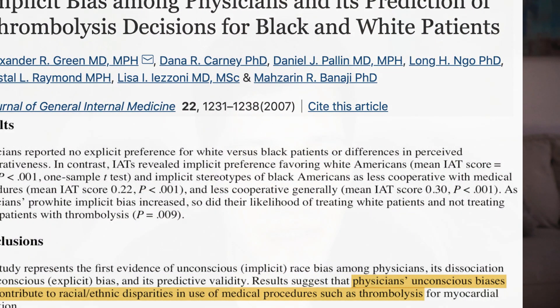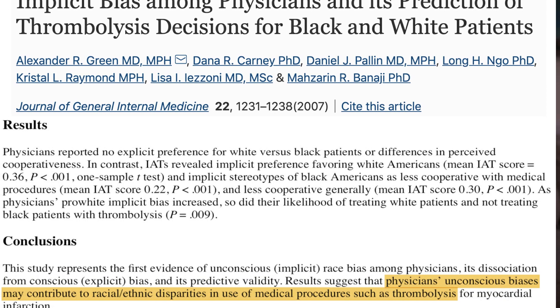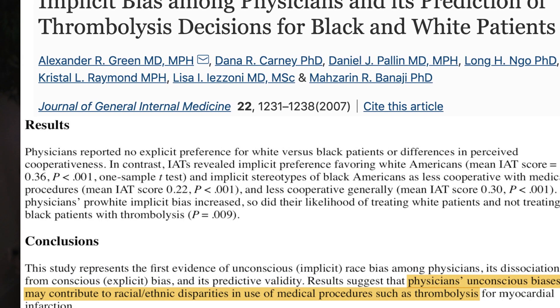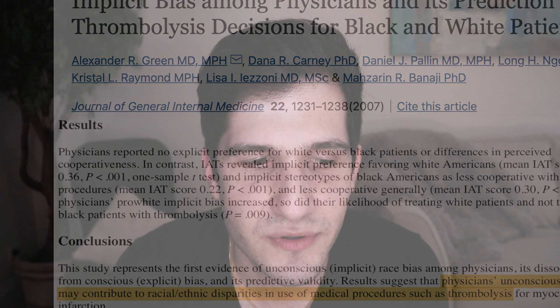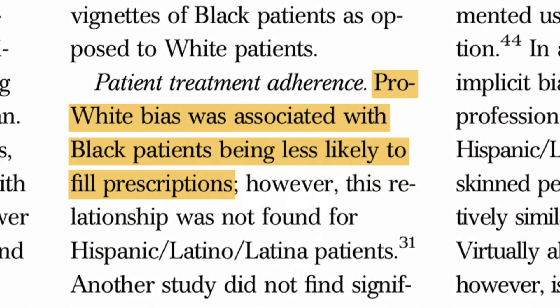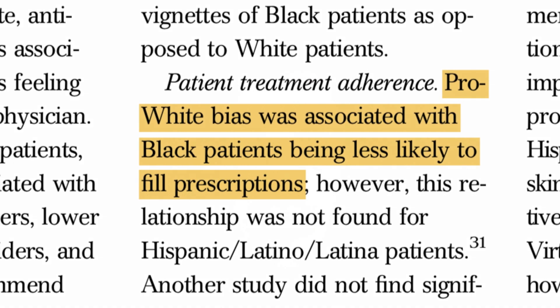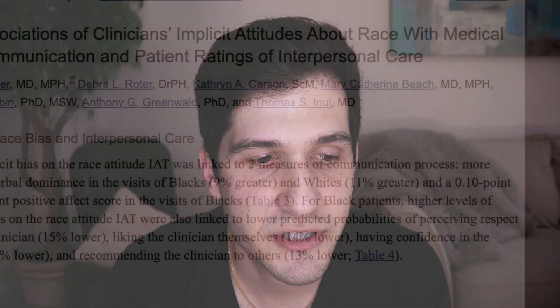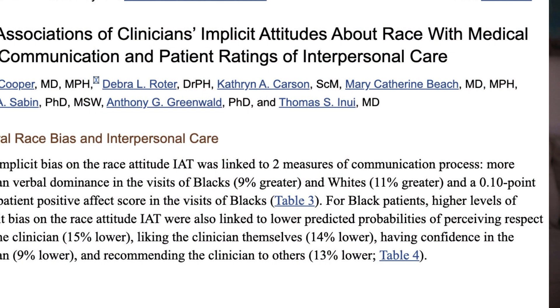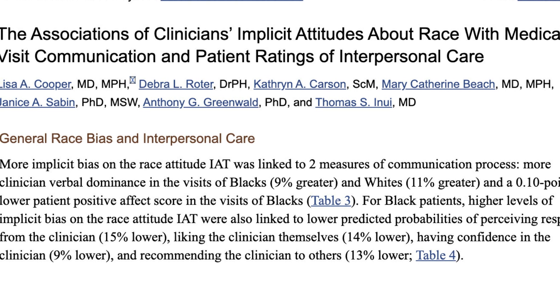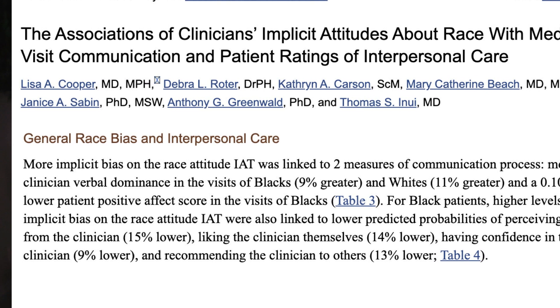Here are several key findings to highlight this point. Physicians demonstrating pro-white bias were less likely to recommend thrombolysis to Black patients and more likely to recommend this treatment to white patients. Additionally, pro-white bias was associated with Black patients being less likely to fill prescriptions. And among Black patients, provider bias was associated with less respect from providers, lower levels of liking the providers, and less willingness to recommend their provider to someone else.